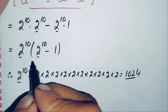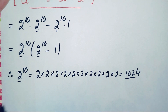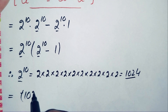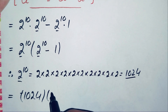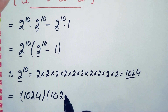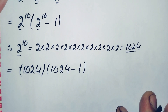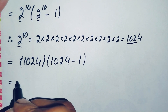Now we replace 2 raised to power 10 with its value 1024. So the expression becomes 1024 times (1024 minus 1), which simplifies to 1024 times 1023.